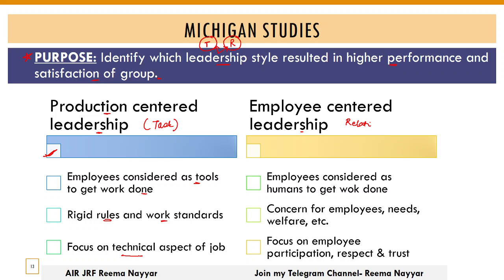The second style is Employee-Centered Leadership. Here the leader's attention is on his employees — whether they are okay. Employees are considered as humans to get the work done. The leader always has concern for employees' needs and welfare. The focus is on employee participation, their respect, and trust in them.